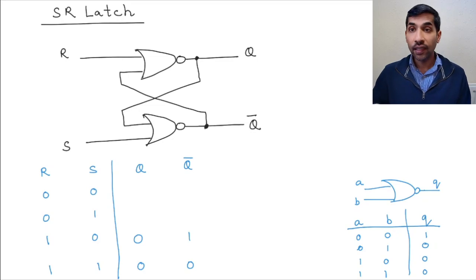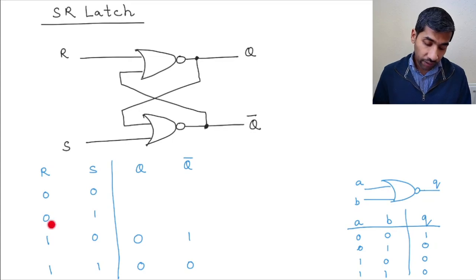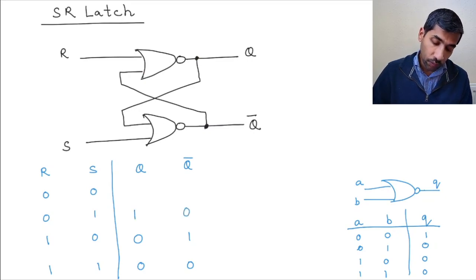And similarly, I'll let you work this out. But maybe let's do it. So if R is 0 and S is 1, then if S is 1, what will be Q bar? It's going to be 0, right? Because one of the inputs of this NOR gate is 1, so the output is going to be 0. If the output here is 0, what are the inputs to this NOR gate? R is already 0 and this is also 0, which means the output is going to be 1. So Q is 1 and Q bar is 0.